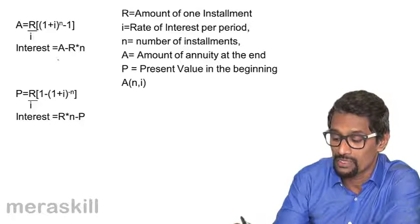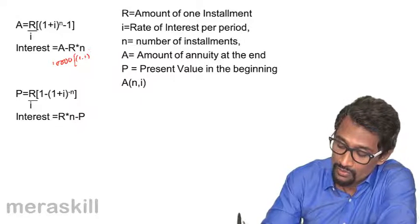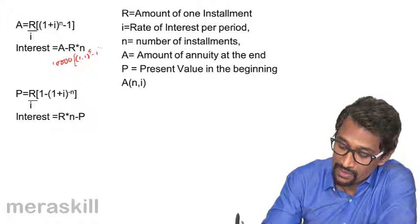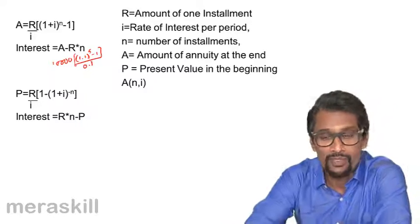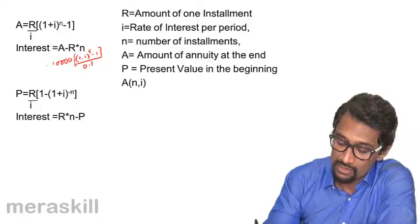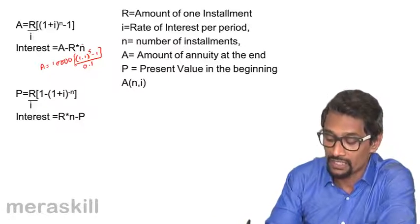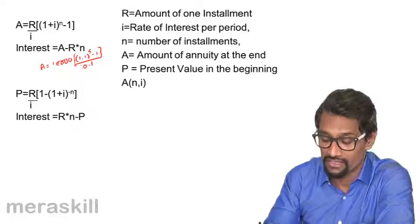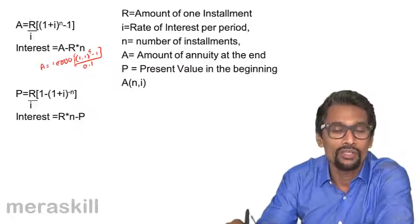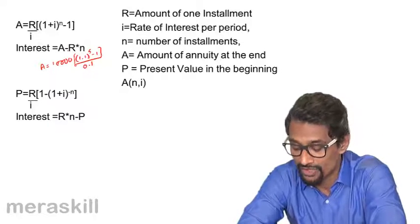In the previous example, it was 10,000 into 1.1 raised to 5 minus 1, divided by 0.1. If you calculate this, it turns out to be A minus 10,000 into 5, which is 50,000 — that gives you the interest which accrues in this particular case. This is how we calculate it.